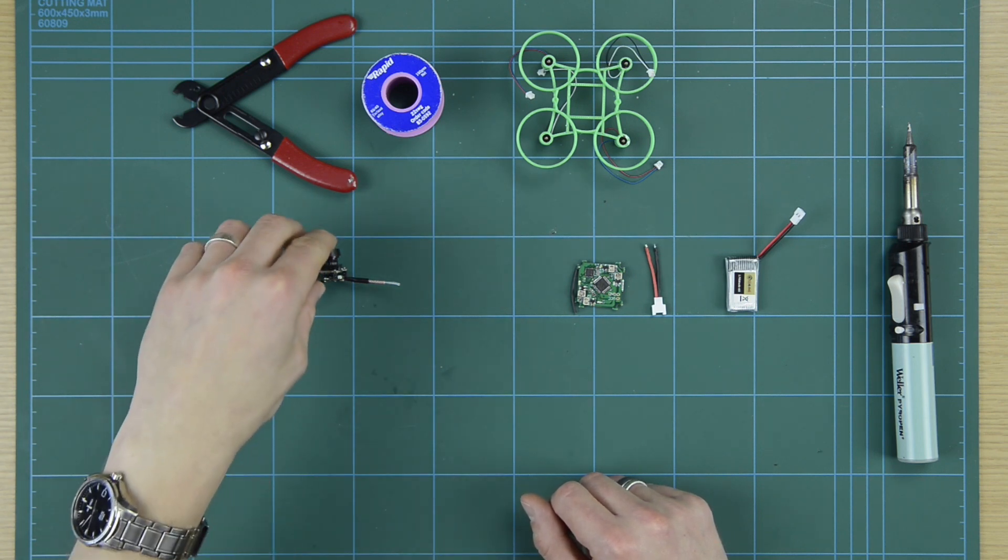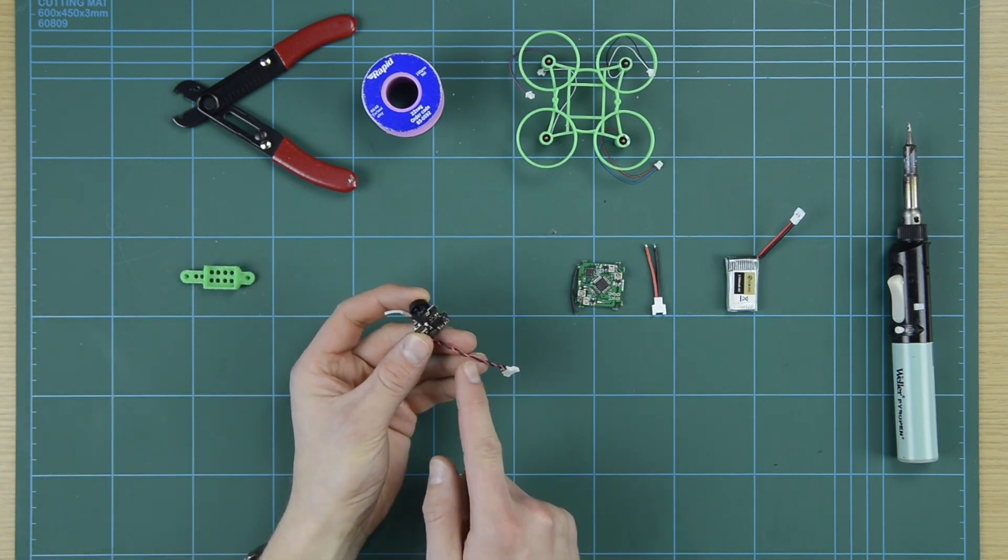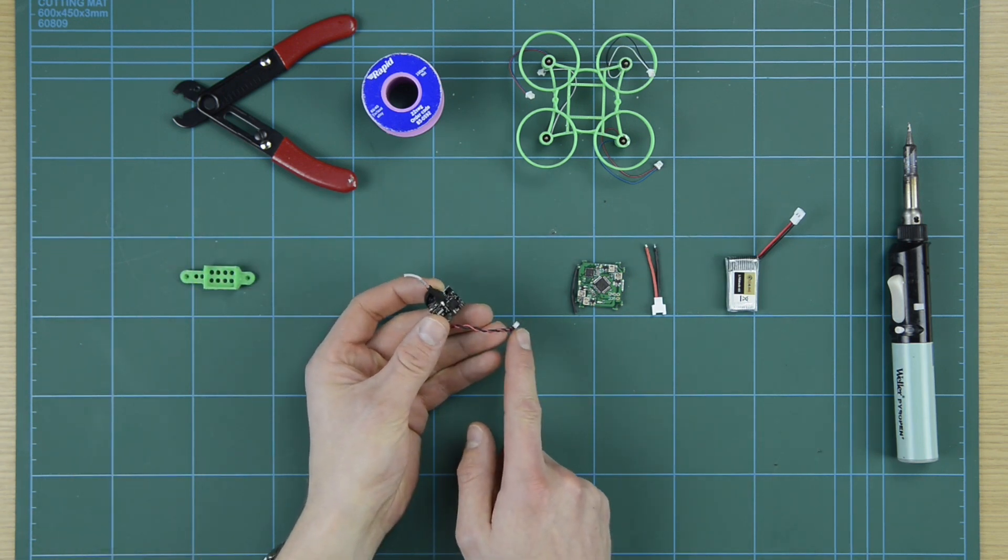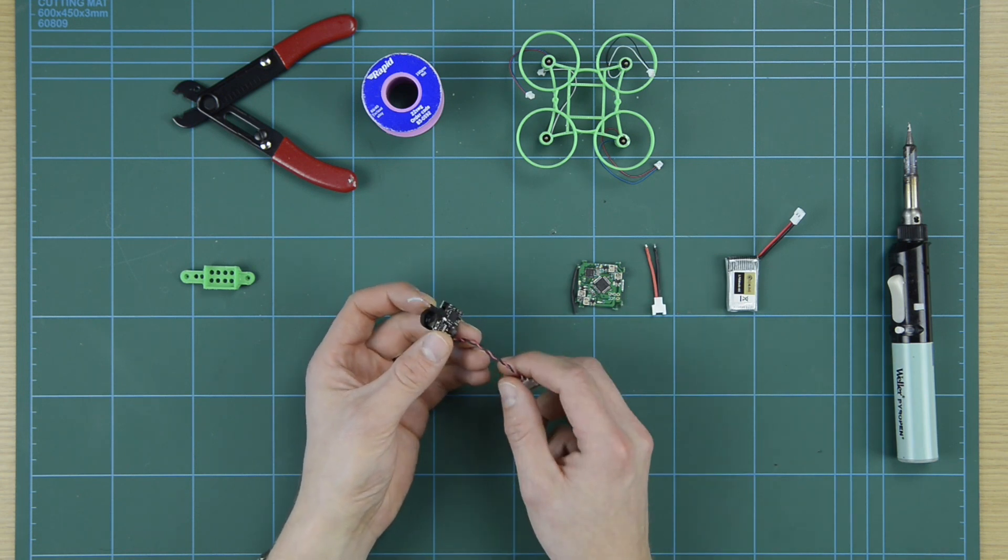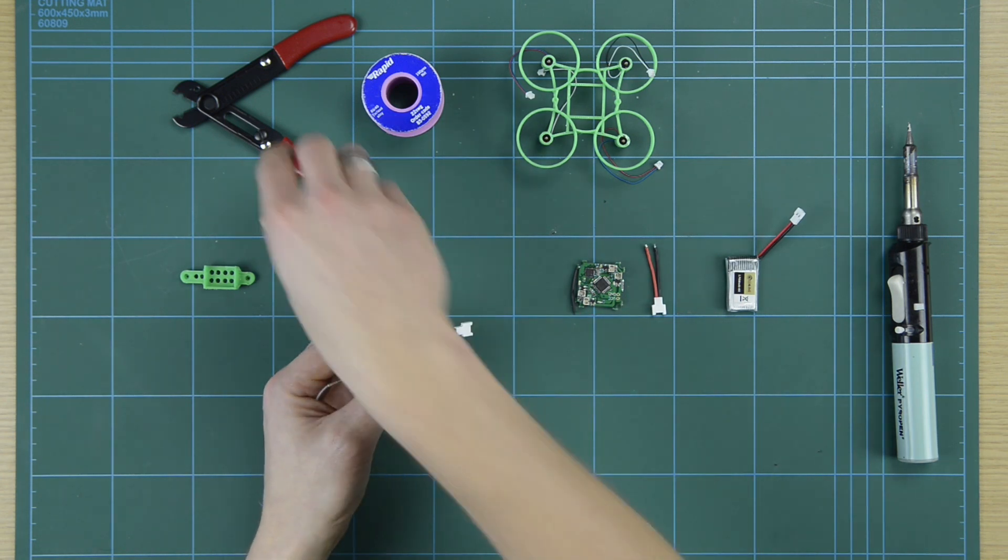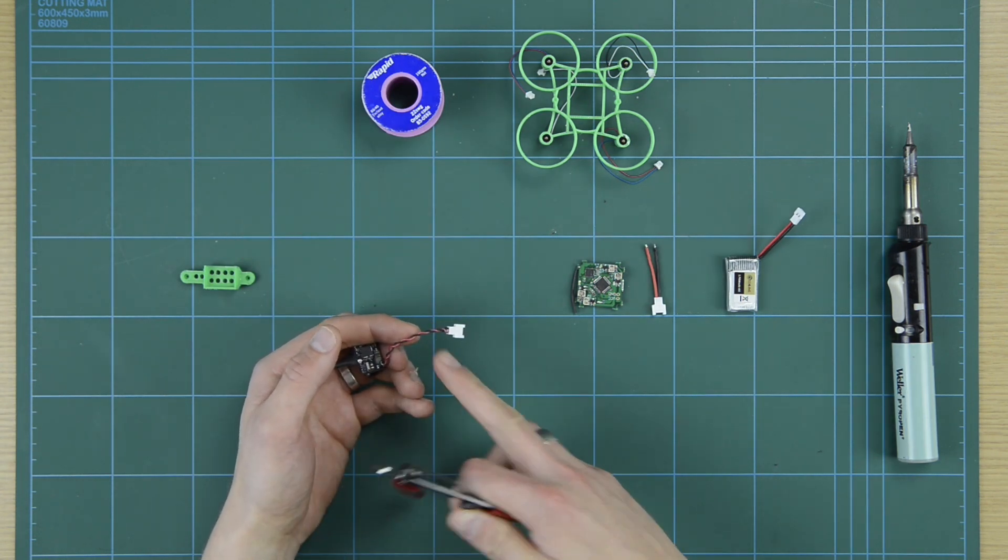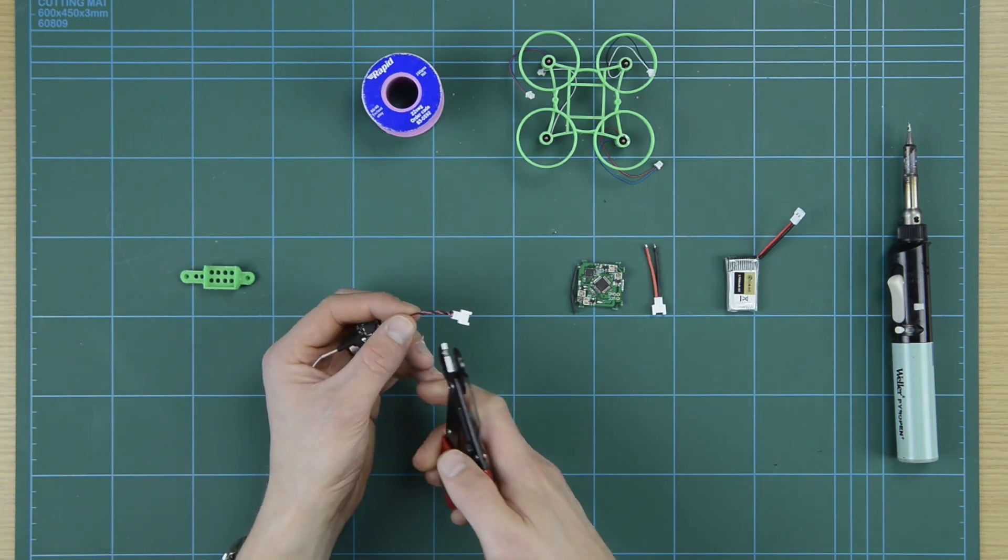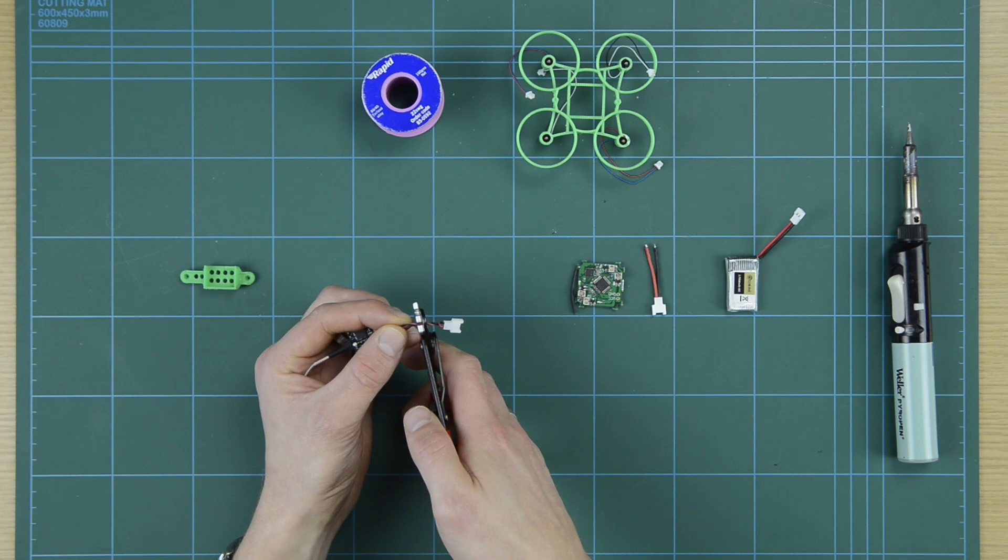So for this method, what we're going to do is we need to solder the wires from the camera to the power wires of the flight controller. So the first thing I'm going to do is cut the connector from the camera. I'm going to cut it about 10 mil from the end.